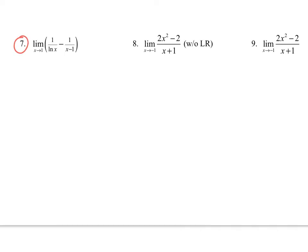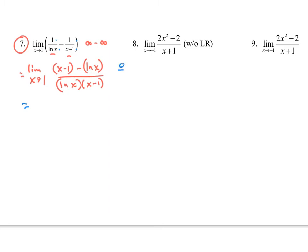Number 7 is a little different — this is going to be infinity minus infinity. The natural log of x goes to 1 over 0, and the other term is also 1 over 0, giving infinity minus infinity. What we want to do is get a common denominator. Let's rewrite this: combining over a common denominator gives us x minus 1 in the numerator and x·ln x as the denominator. Now plugging in gives 0 over 0, so we can use L'Hopital's Rule.